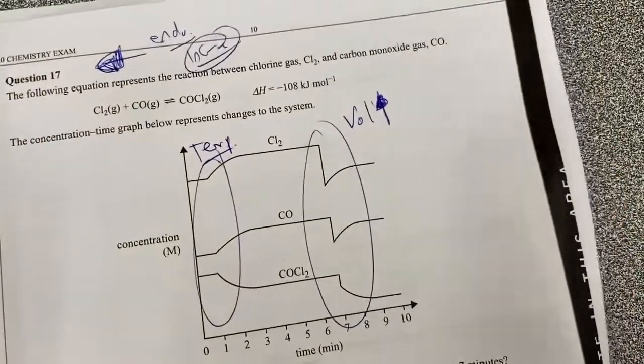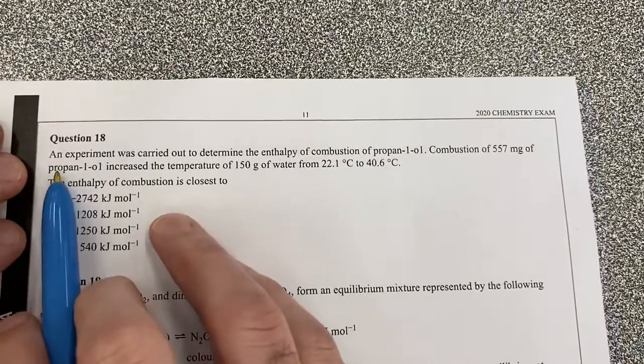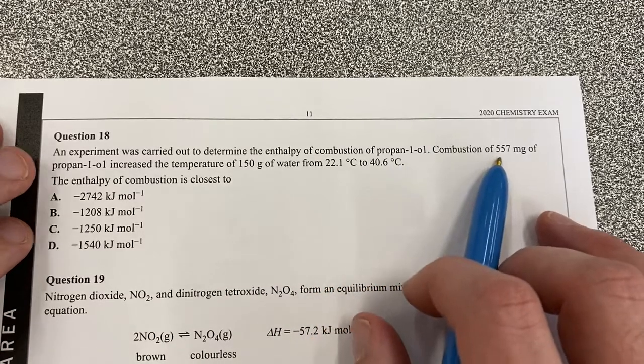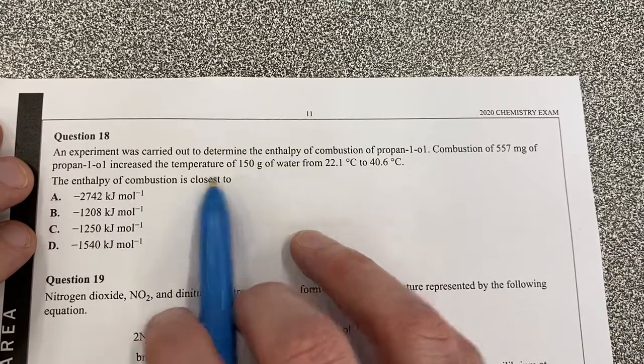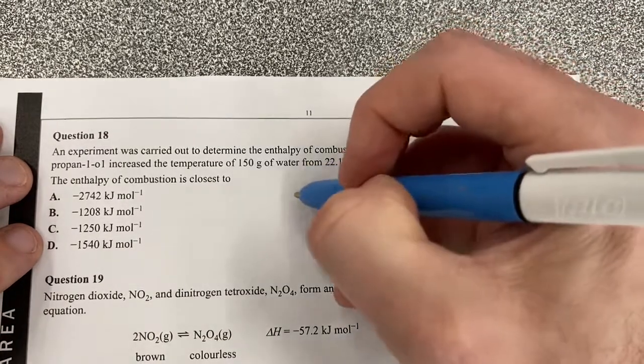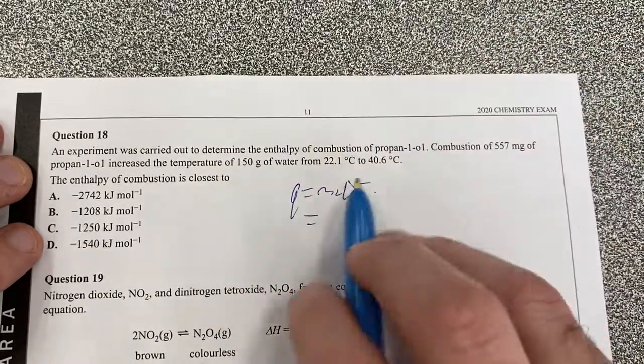Let's move on to question 18. An experiment was carried out to determine the enthalpy of combustion of propanol. Propanol combusting that much propanol increased the temperature of water by that. The enthalpy of combustion is closest to what? Okay, so we're going to have Q equals MC delta T, because we've got an increase in water.